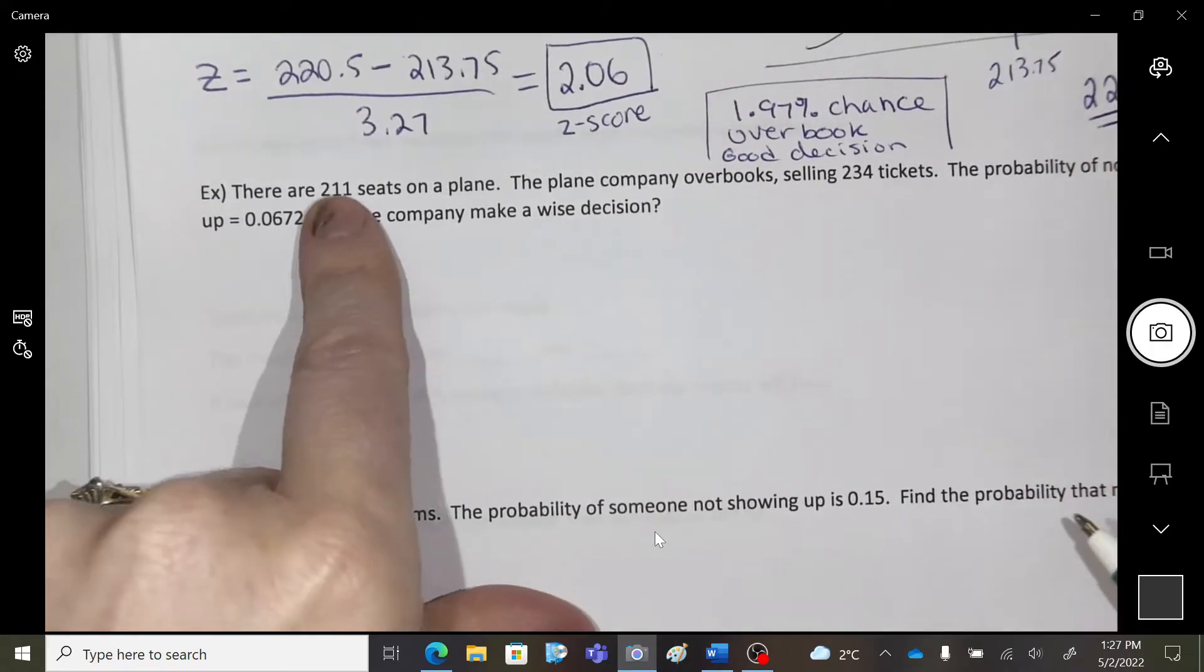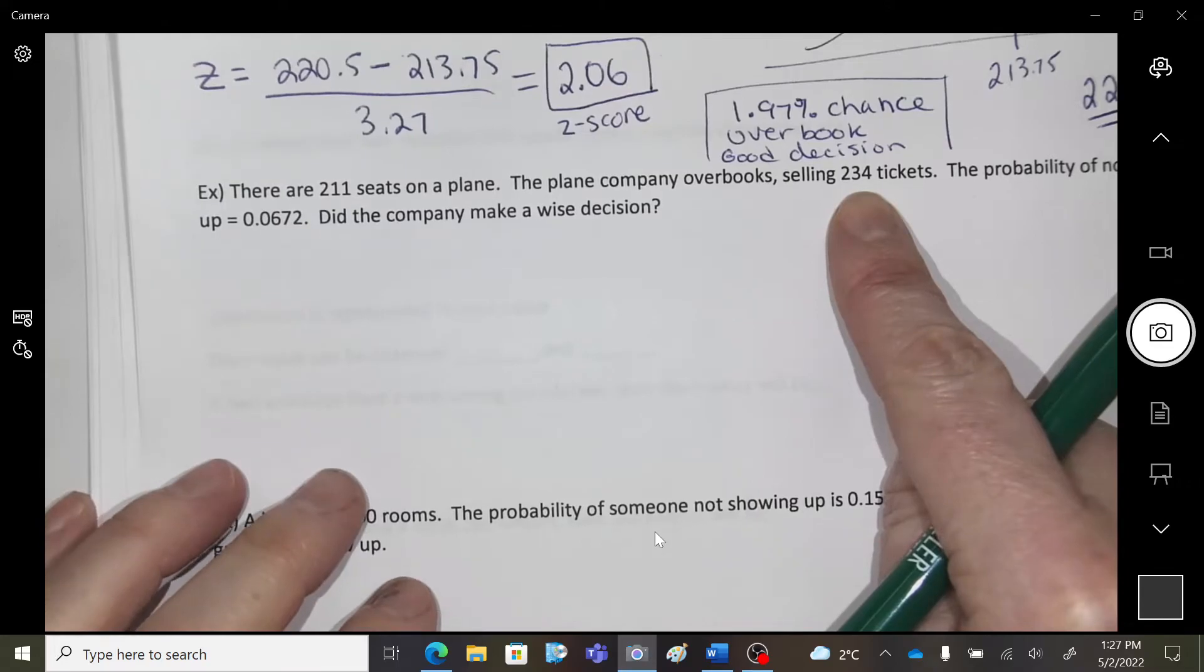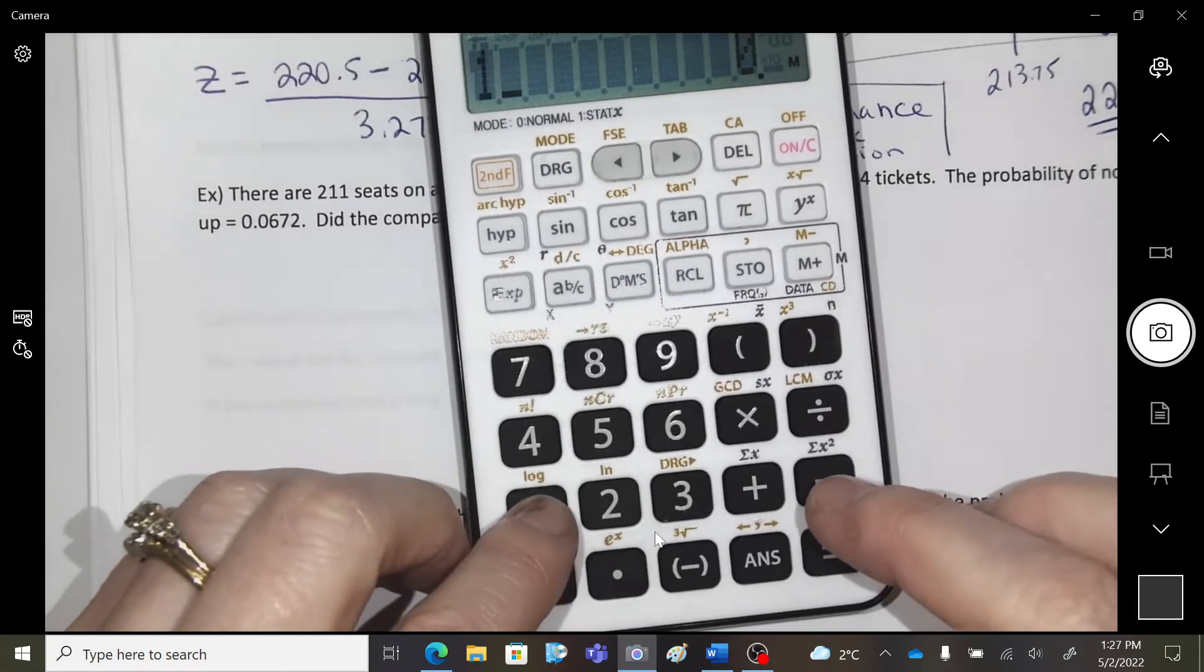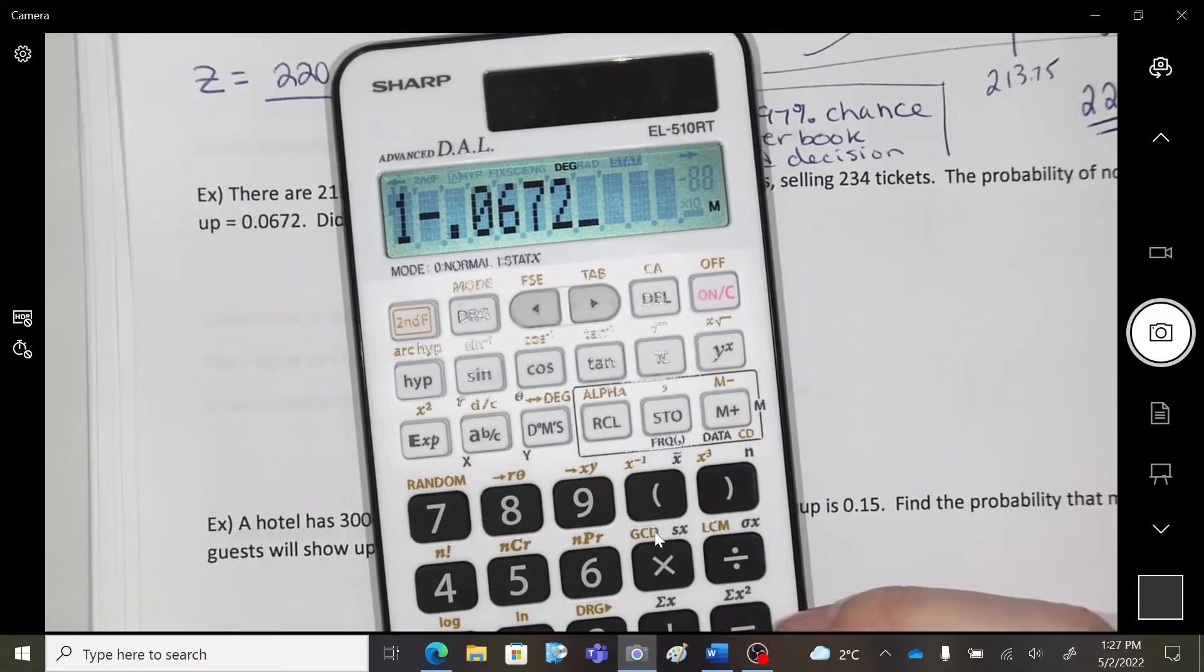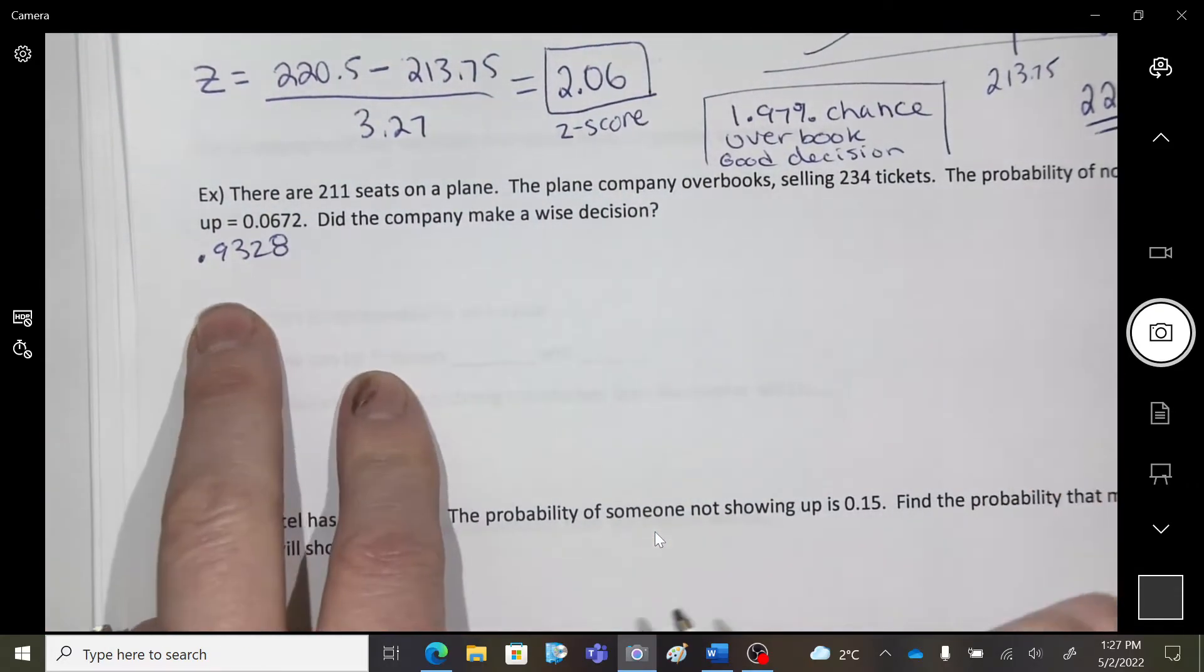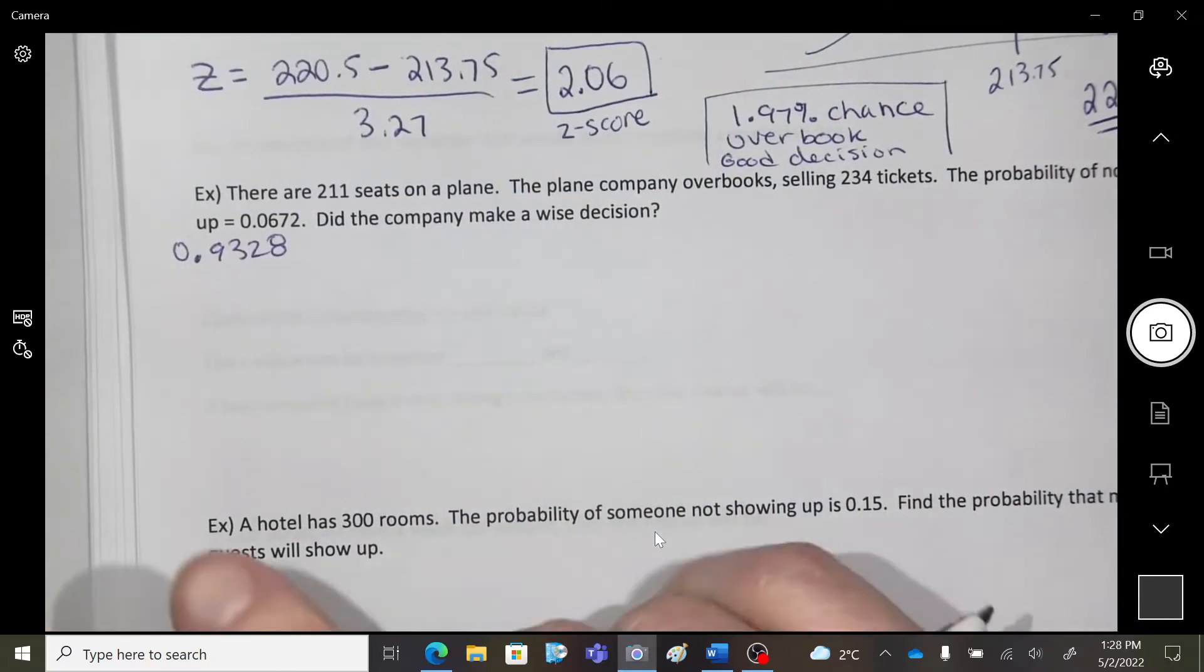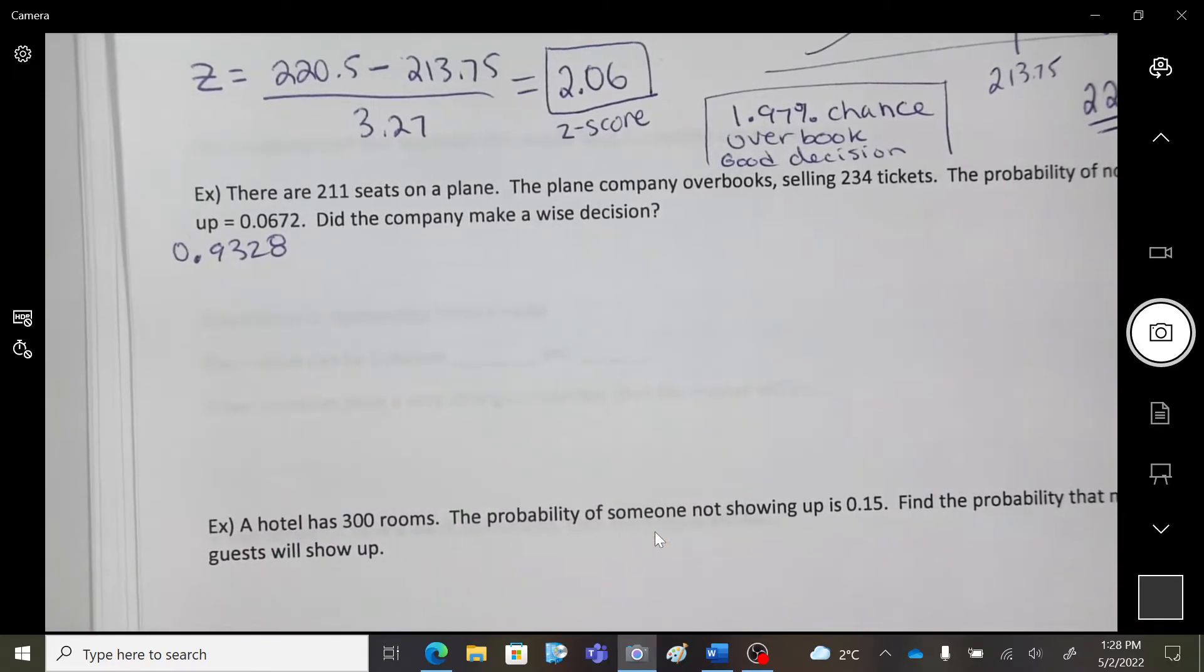We got 211 seats on the plane, the company overbooks, and they sell 234 tickets. The probability of not showing up is that. I'm just going to do this right away here. So, this is a 0.9328. Okay, those are the opposite probabilities. Not showing up, so that will be showing up.